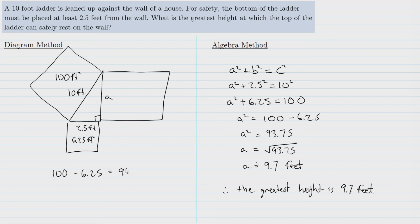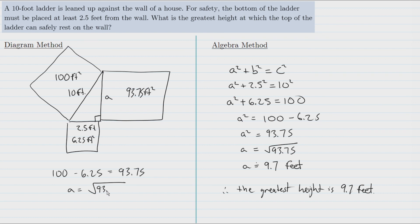We find the missing area by subtracting 6.25 from 100, which gives us 93.75 feet squared as the area of the remaining square. Finally, we find the length of side A by determining what number multiplied by itself gives 93.75 — that is, the square root of 93.75, which equals approximately 9.7 feet.